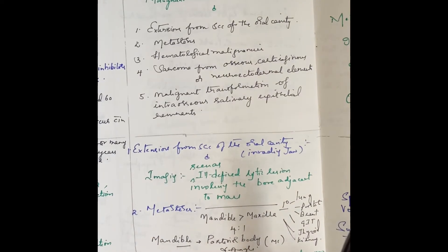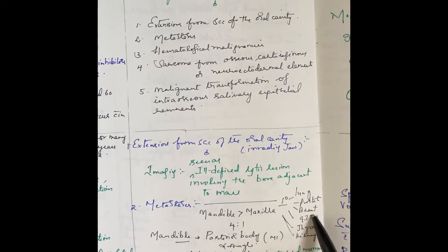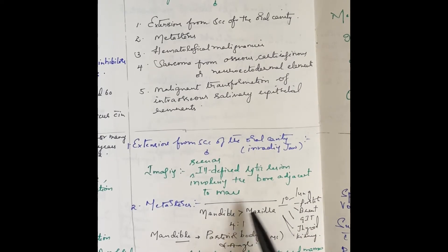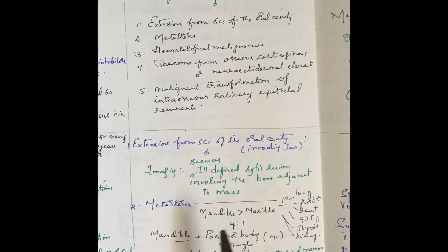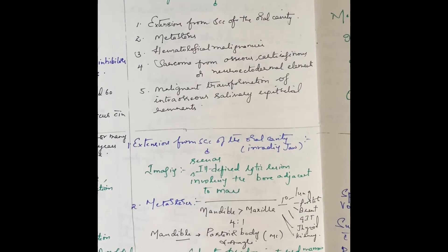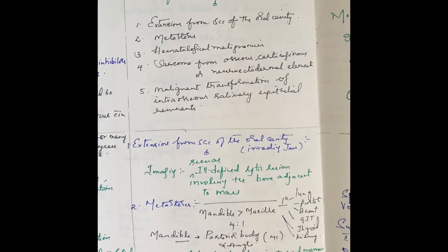For metastasis, mandible is more commonly involved than maxilla — approximately four times more. Primary sources include lung, prostate, breast, GI tract, thyroid, and kidney. The posterior body and angle of the mandible are most commonly involved due to the predominance of red marrow in this region.